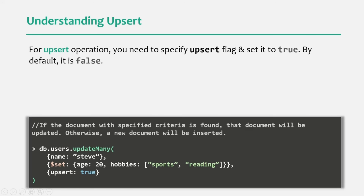If there is any document which exists with name Steve, that document will be updated with these values. But if the document does not exist, we want to insert a new document where the name will be Steve, the age will be 20, and hobbies will be the hobbies array. So either if the document exists with the given filter criteria we will update it, but if we don't find any document, then we are going to insert a new document with the fields specified in the filter criteria and the fields specified for $set.